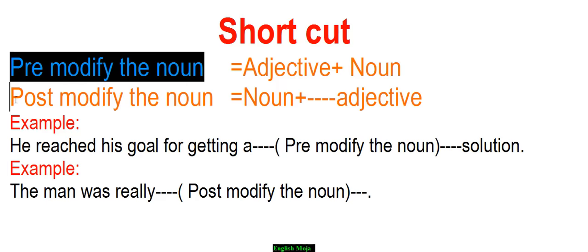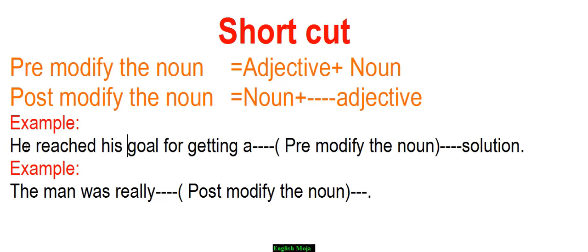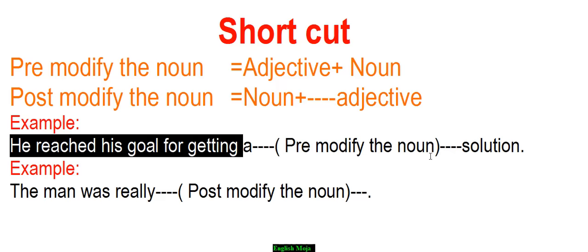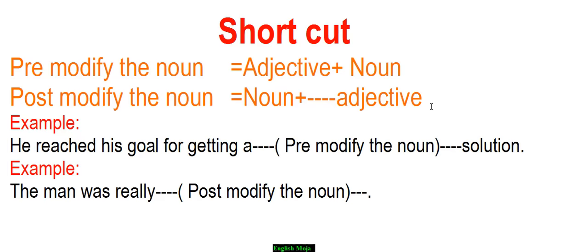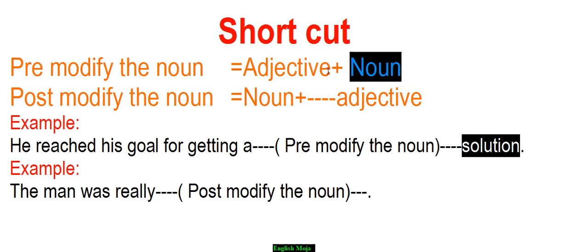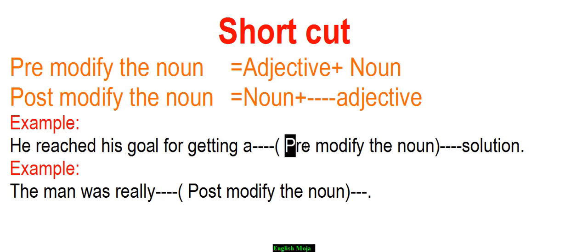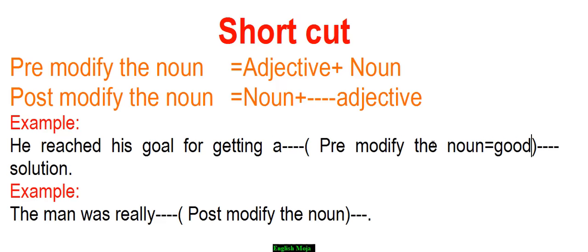If you have a sentence or a passage, you can use context as a clue. For example: pre-modified noun means adjective plus noun. You can use the adjective before the noun. If the sentence is true, take whichever adjective can be written in the sentence appropriately.